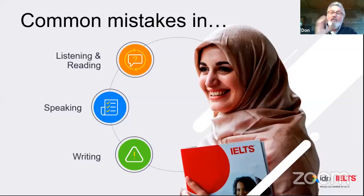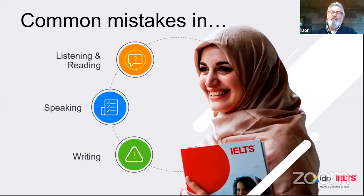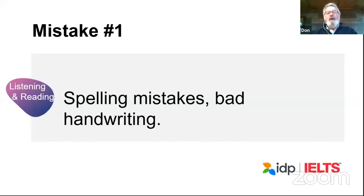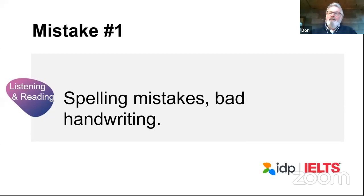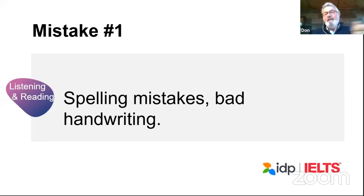We're going to look at the whole test — the mistakes people sometimes make with listening and reading, and more with speaking, and especially with writing. Let's go through these mistakes one by one. They are not in any particular order. They begin with listening and reading, then go to speaking, and finally we'll talk about writing. But the first one is a very obvious one.